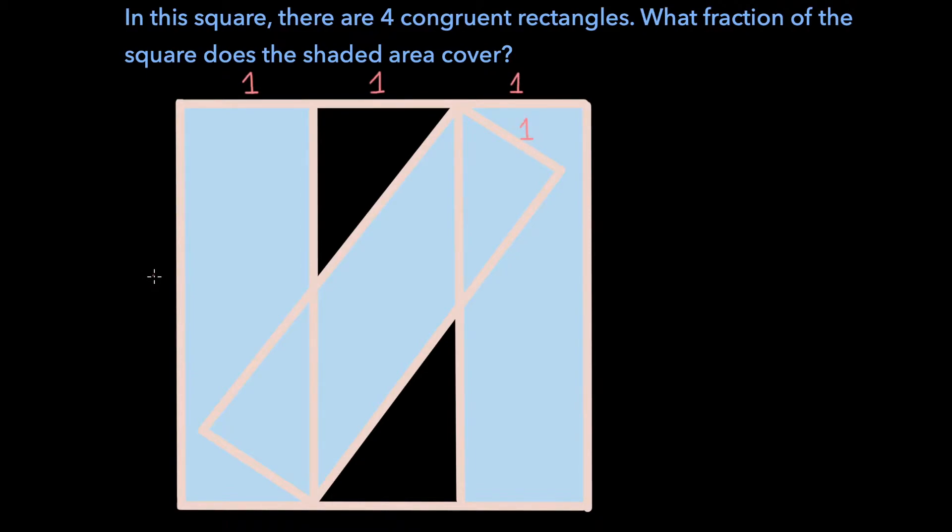And if this is the case, the side length for the entire square must be 3. Now here comes the really key observation we have to make to solve this problem.